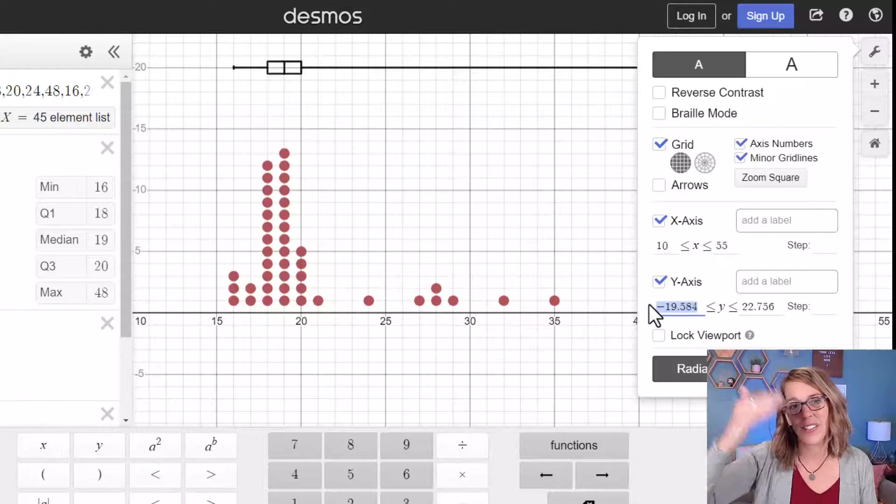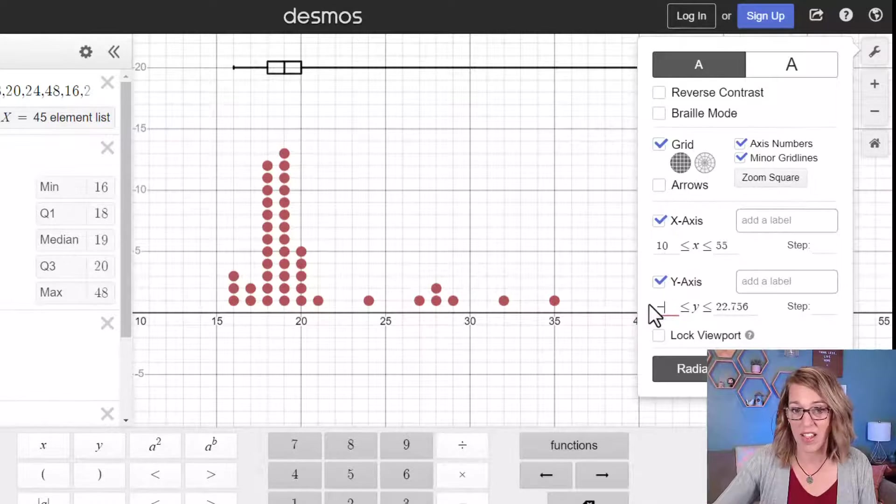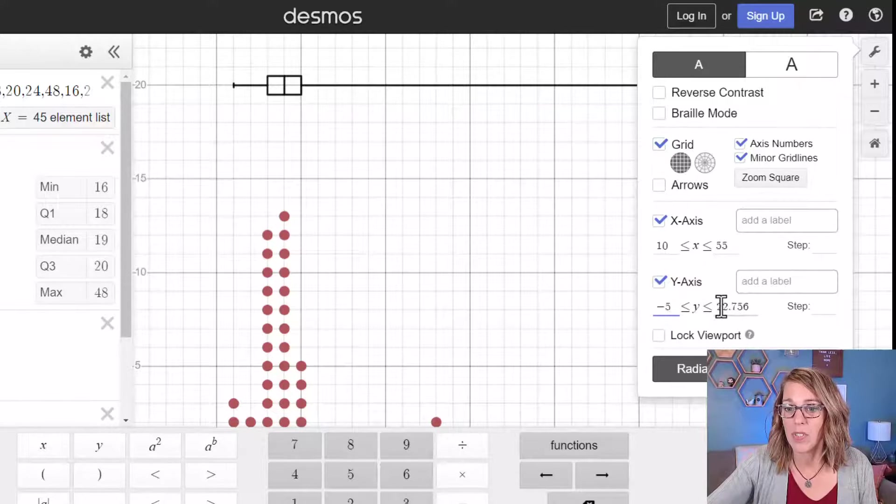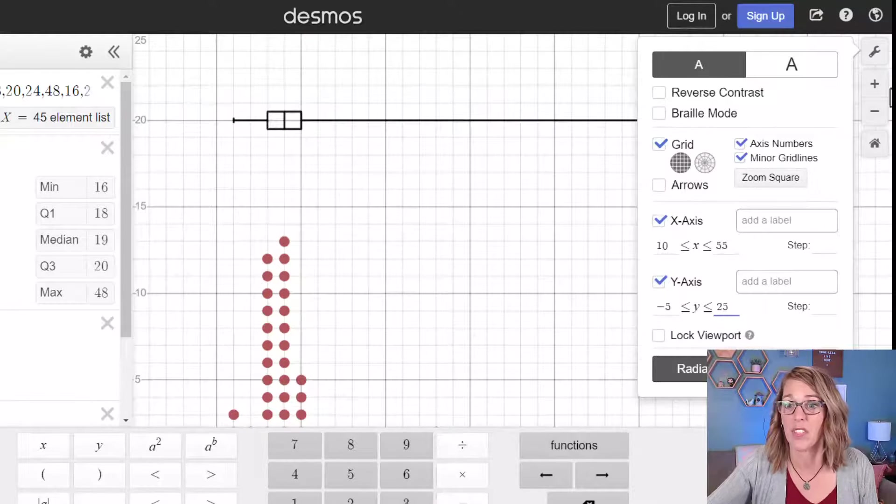And then for the y-axis I want to go a little bit below the y-axis, so let's do maybe negative 5, and then up to, actually I think where I am is pretty good. I'll do 25 just for good measure.